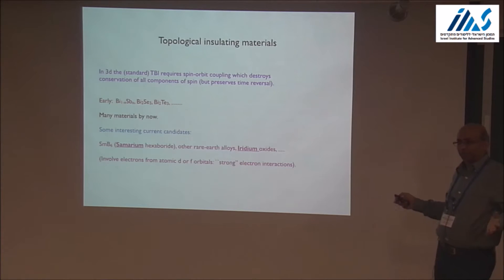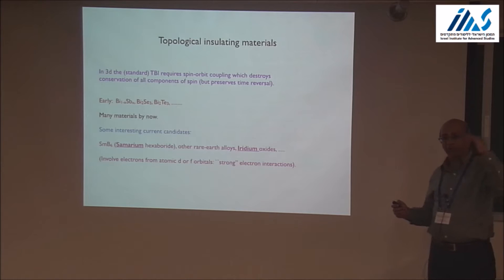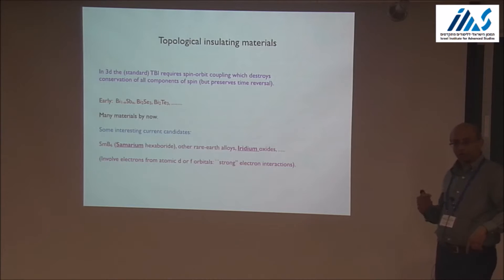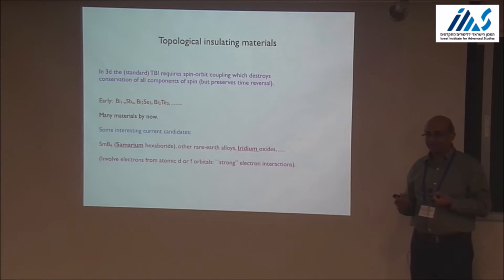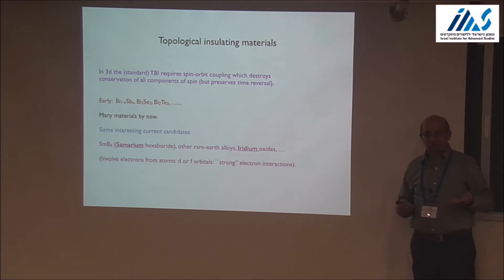For the purpose of what I'm going to talk about in these lectures, what's interesting are current candidates that people are exploring. A famous example is samarium hexaboride. Samarium is one of those rare earth elements with partially filled f-orbitals. Other examples include iridium oxides. The thing that's interesting about this class of materials is that they involve electrons from atomic d or f orbitals, and typically when the important electrons come from d or f orbitals, you have to worry about the Coulomb interaction between the electrons very seriously. These are strongly correlated materials, and experimentally people suspect they may also show topological phenomena.